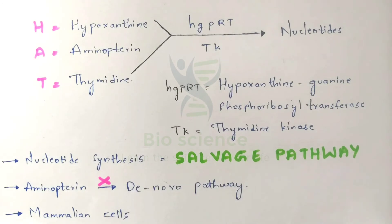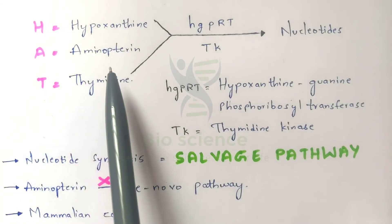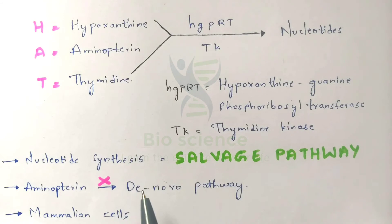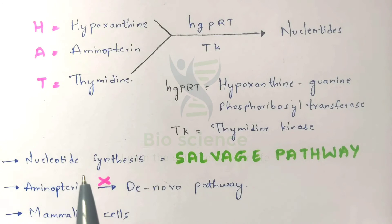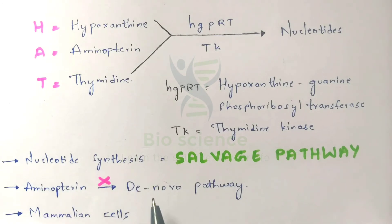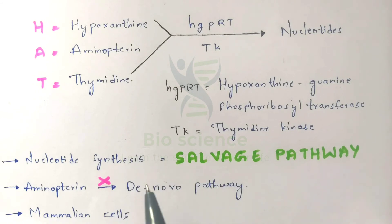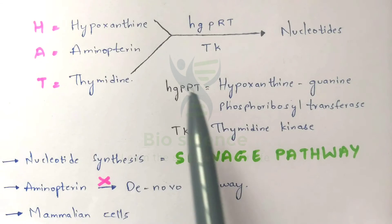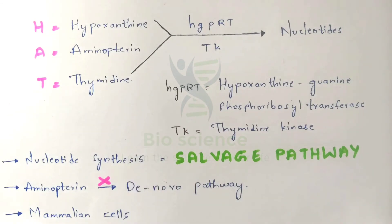In the salvage pathway, Hypoxanthine and Thymidine are converted into nucleotides using both enzymes. However, Aminopterin cannot undergo the de novo pathway of nucleotide synthesis because Aminopterin acts as an inhibitor — it blocks the de novo pathway. It can only undergo the salvage pathway if Hypoxanthine or Thymidine is present.